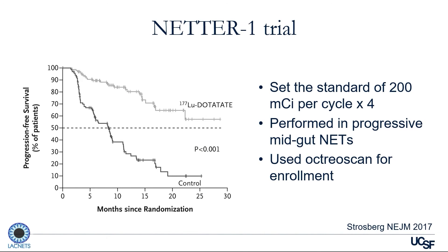This was studied in the NETTER-1 trial, a phase three study that compared lutetium-177 DOTATATE to double-dose sandostatin as the control arm — getting two injections of sandostatin every month versus lutetium DOTATATE. The NETTER-1 trial showed markedly improved progression-free survival with lutetium DOTATATE, and it was performed in progressive mid-gut NETs. This set the standard treatment modality as 200 millicuries given four times every eight weeks, and this is what we do in practice around the country.